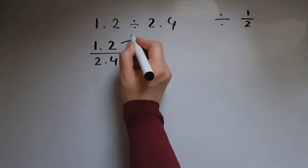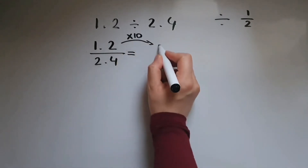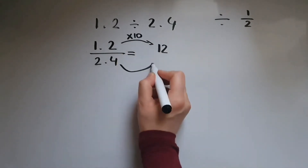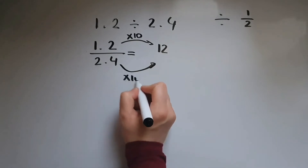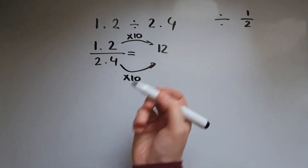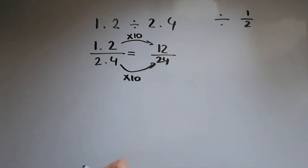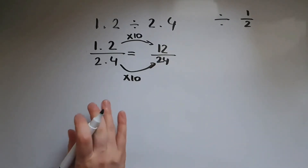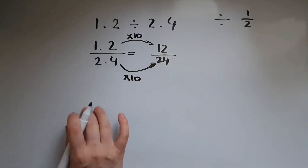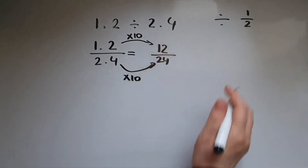If I multiply 1.2 by 10 I get 12. If I multiply 2.4 by 10 — because it has to be multiplied by the same number — I get 24. Now I could use the bus stop method and do 12 divided by 24, or I can continue to simplify the fraction.